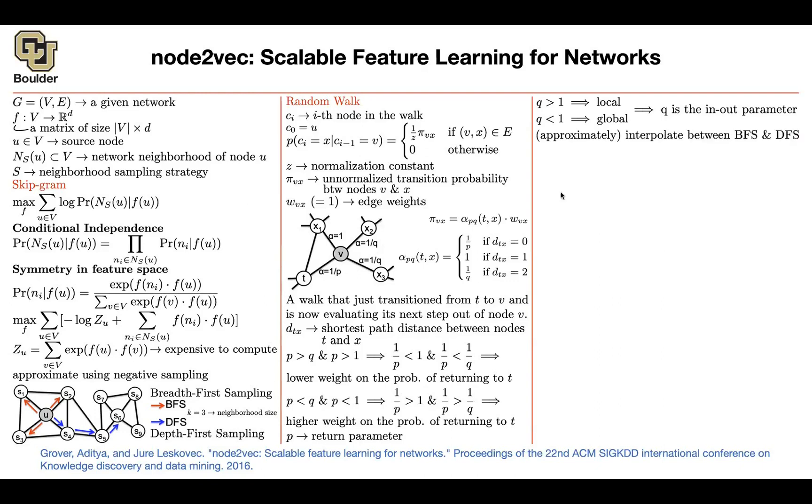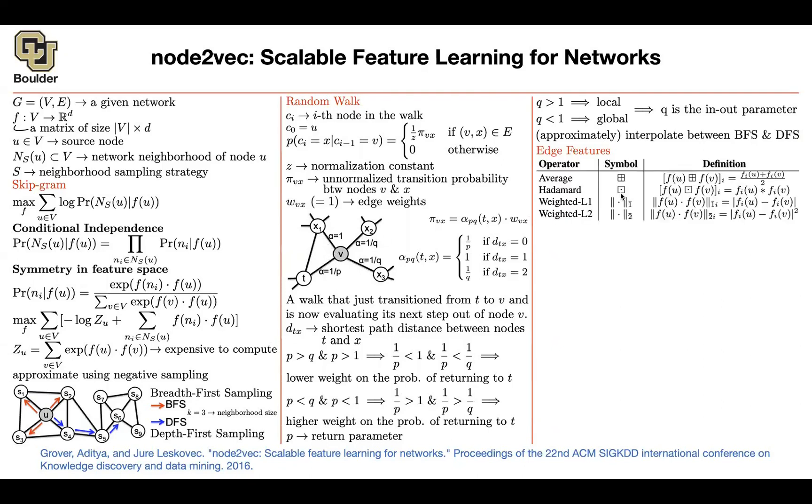You are going to go out. And based on these two hyperparameters, P and Q, you can approximately interpolate between breadth-first search and depth-first search. So you can play around with those two numbers based on your data set. And somebody might say, okay, after I do my training, what if I want to classify my edges rather than classify my nodes? What features are you going to associate to edges? And you have multiple options.